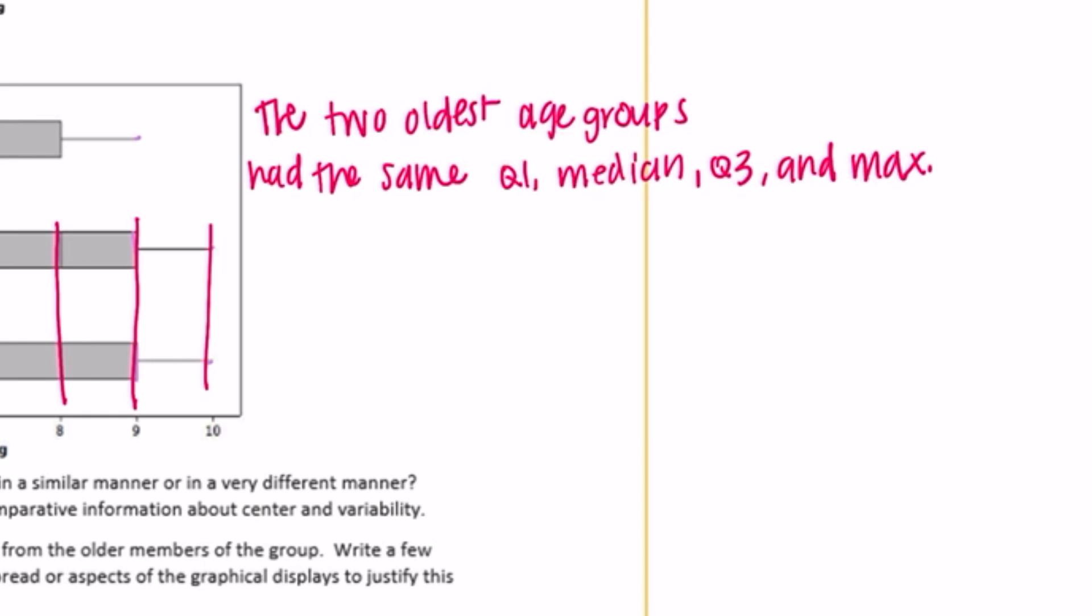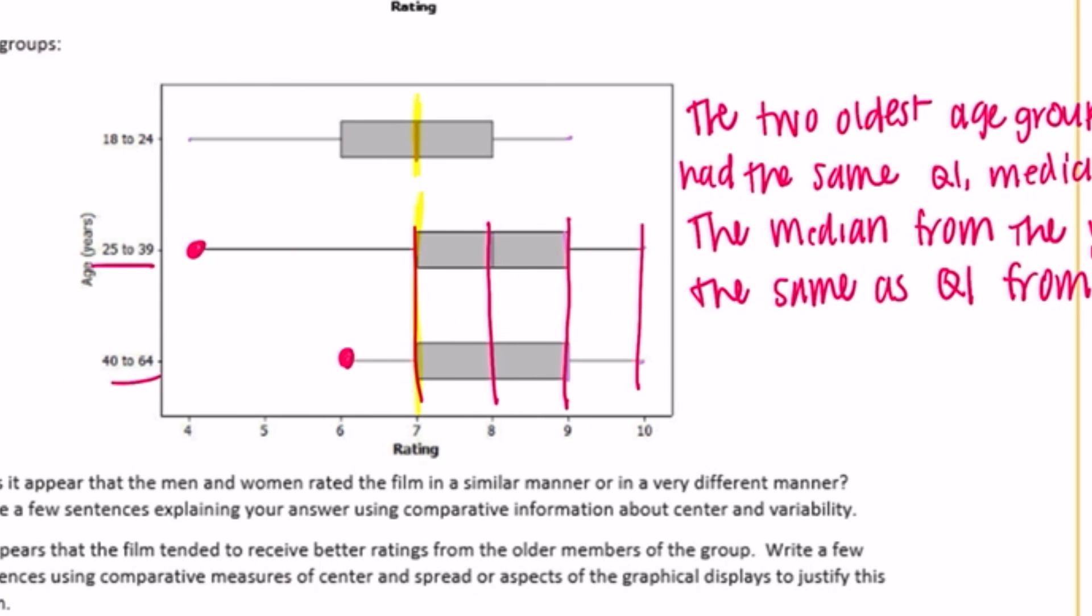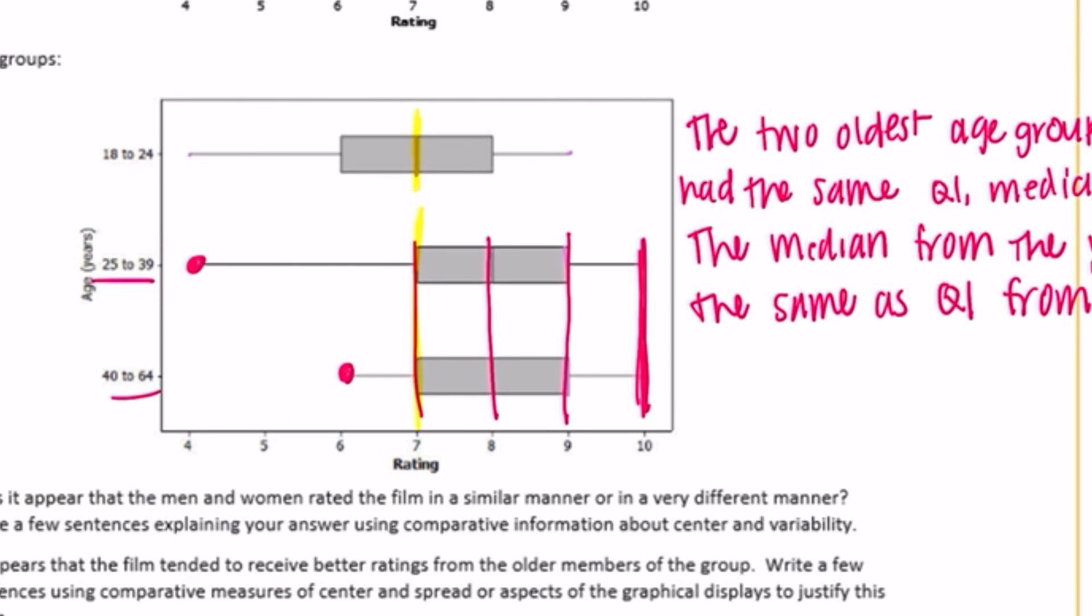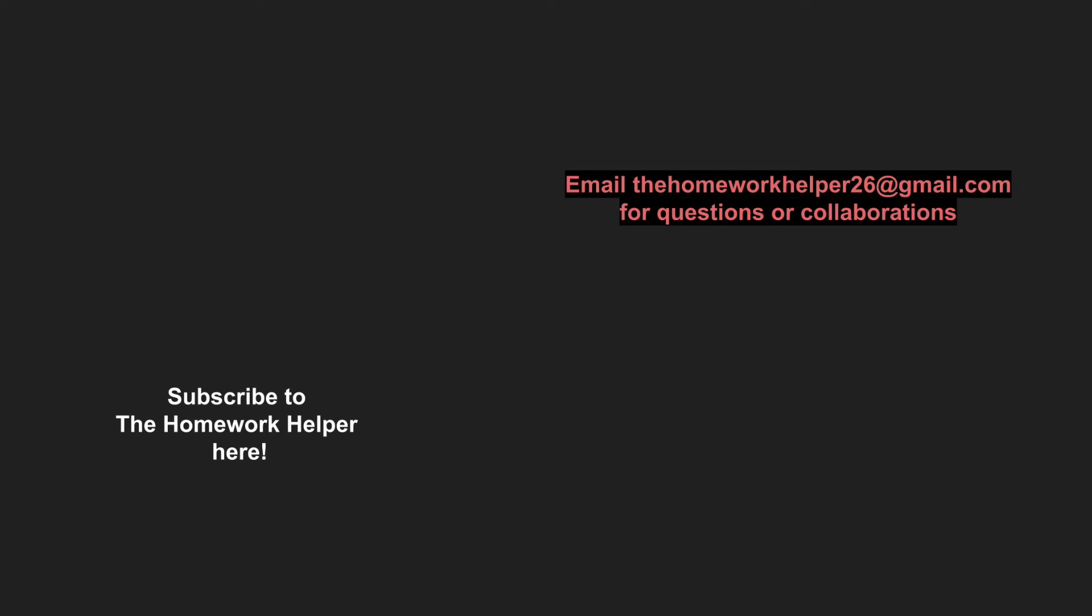We're just looking for any points that we can use to compare. There's really no right or wrong answer. You're just noticing your observations and how things differ from one another. The median from the youngest group was the same as Q1 from the older two groups. You could also say the two older groups had a max score of 10, whereas the youngest group had a max score of 9. You could say that the two younger groups had a min score of 4, but the 40 to 64 group, the oldest group, had a minimum score of 6. So you can just go through, explain some more observations, maybe pick one more to write about.